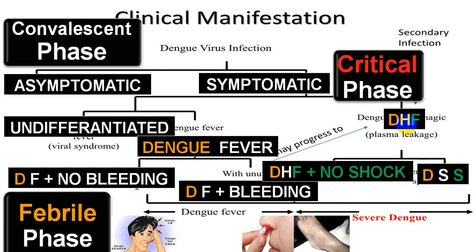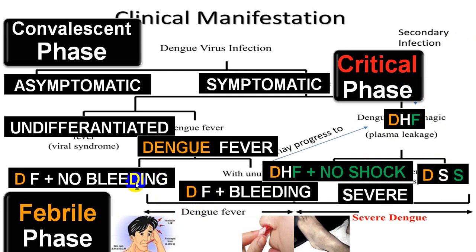Dengue hemorrhagic fever includes cases without shock and with shock — dengue shock syndrome. All three are put into a group called severe dengue. A person without bleeding is labeled dengue fever without bleeding. As the person starts bleeding, they head towards severe dengue, also called dengue hemorrhagic fever. That is divided into two groups: with compensated shock and with shock stage, which is dengue shock syndrome. From this, the person may recover — we call it the convalescent phase — or the person may go into expanded dengue syndrome.